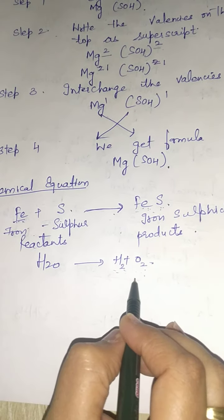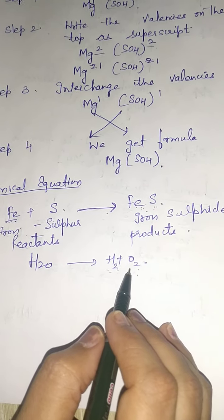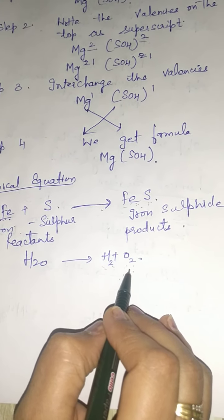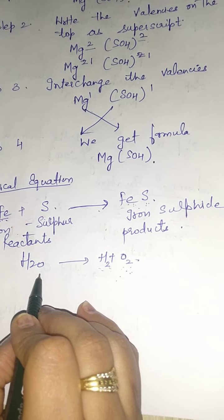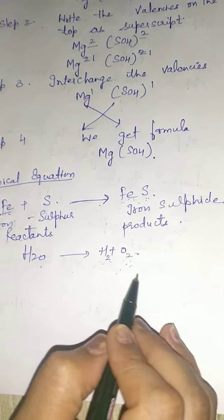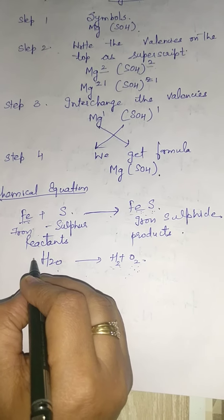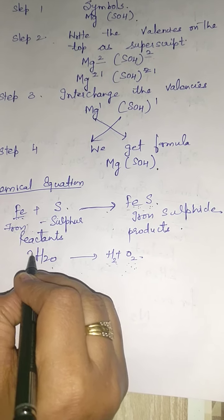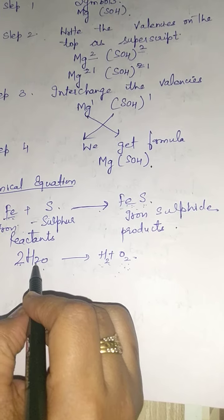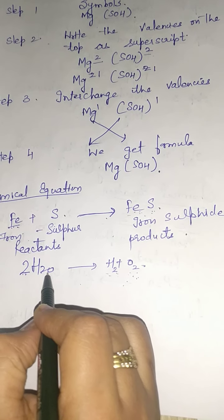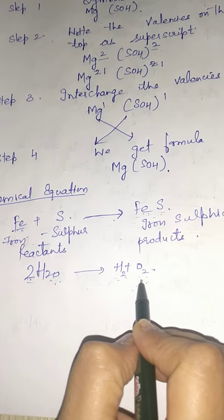Is this equation balanced? No, it is not balanced. The number of oxygen atoms on the product side is 2, but on the reactant side it is 1. Now we have to balance this equation. We can increase the number of oxygen atoms by putting a coefficient of 2 here. With this, the number of oxygen atoms increases to 2 on both sides, so oxygen is now balanced.